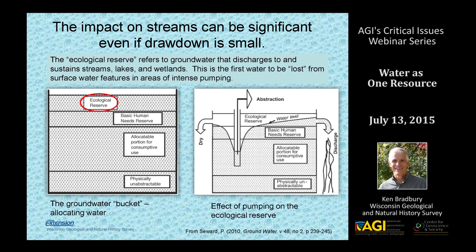A scientist named Seward, a South African, illustrated this with the concept of thinking of groundwater as a bucket. Even a full aquifer can have deleterious effects from a little pumping on ecological resources, because not all the water is equally available. Some very deep water is physically unabstractable. Water in the middle of the system can be pumped for human or agricultural use. But at the top is the 'ecological reserve' — the first water to discharge to a lake, stream, wetland, or spring — and that's the first water depleted when pumping begins.